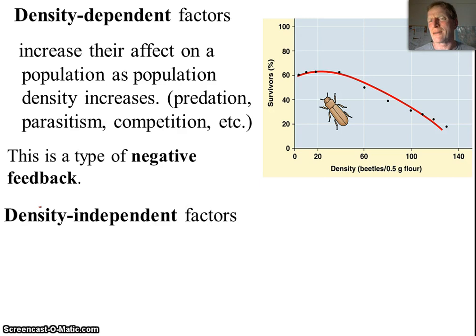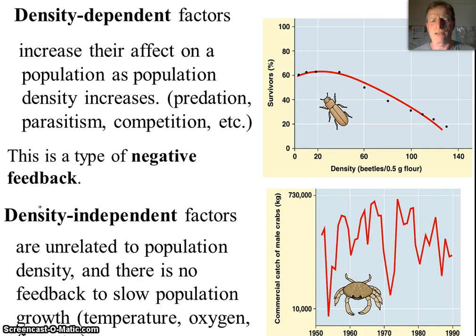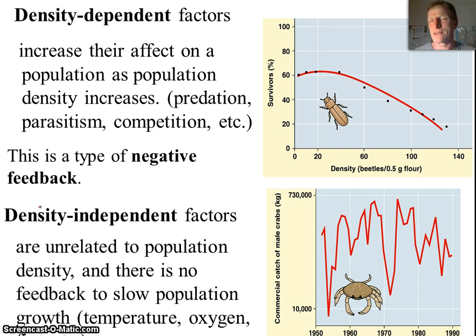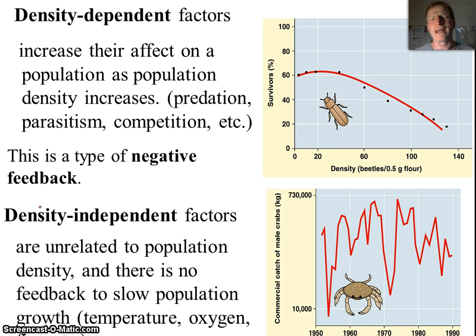There are other factors that aren't dependent on density, called density-independent factors. These are things like natural events — weather, a hard frost that kills all the insects or flowers. In the Gulf of Mexico, there's a dead zone that appears every summer with no oxygen, and that can't sustain any fish. Temperature, oxygen levels, natural disasters, hurricanes — these cause massive fluctuations in populations regardless of the population size.